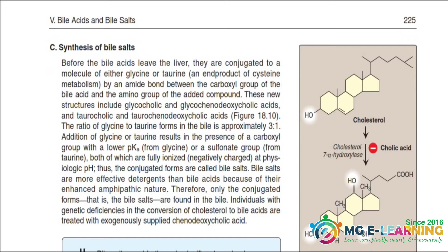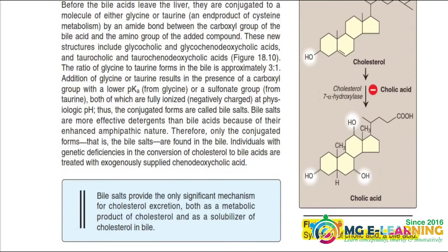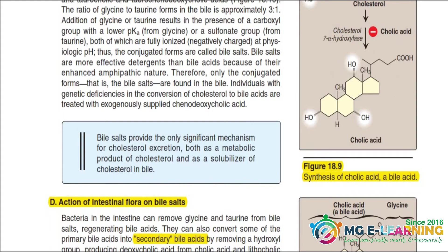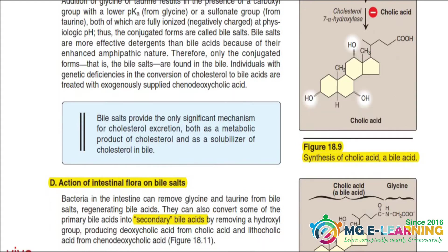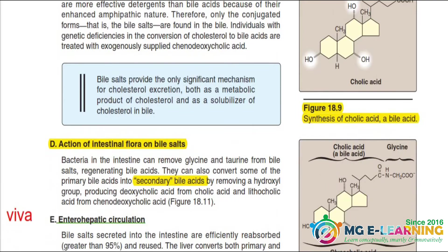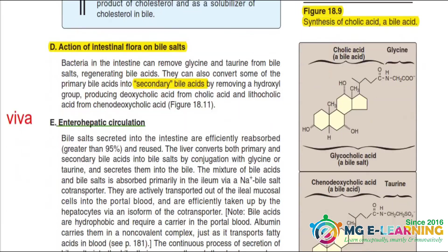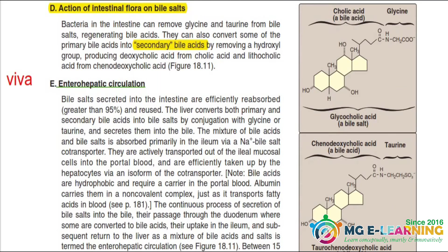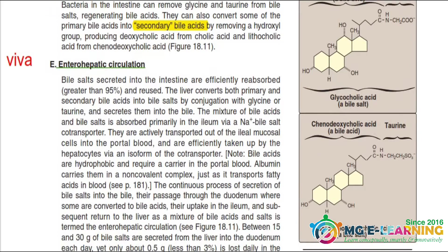Figure 18.9 covers the action of intestinal flora on bile salts and secondary bile acids — how secondary bile acids are formed. Then you have the enterohepatic circulation, which is important from the bile salts point of view.